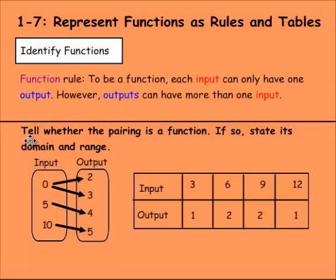For this example, it says tell whether the pairing is a function. If so, state its domain and range. Here we have the input of zero with two outputs. If you look at the rule again, each input can only have one output. So you would say this is not a function, even though the five only has one, the ten only has one. It broke the rule with the zero.